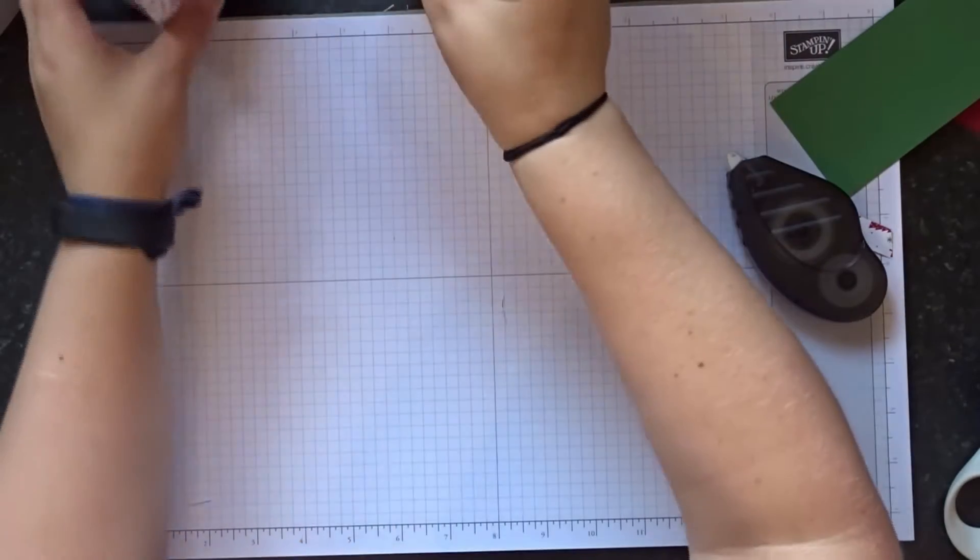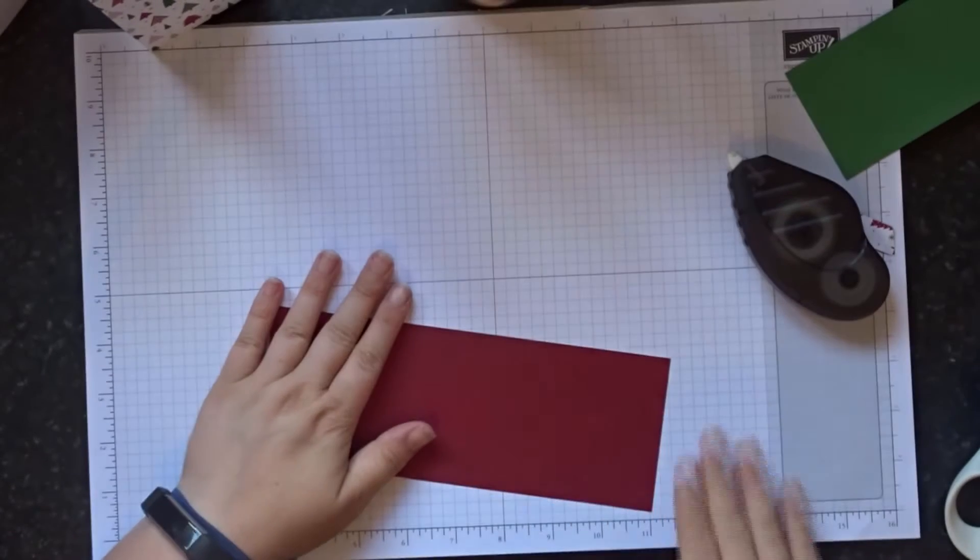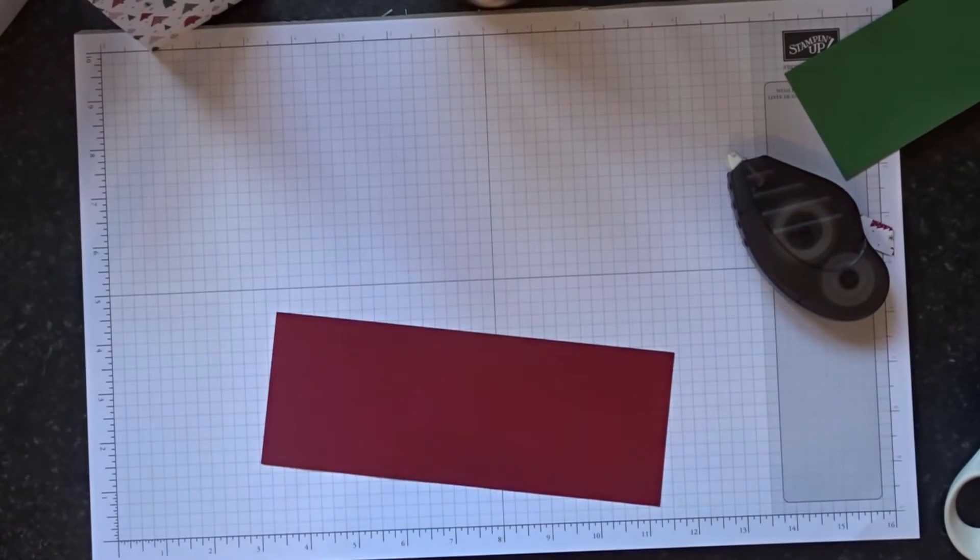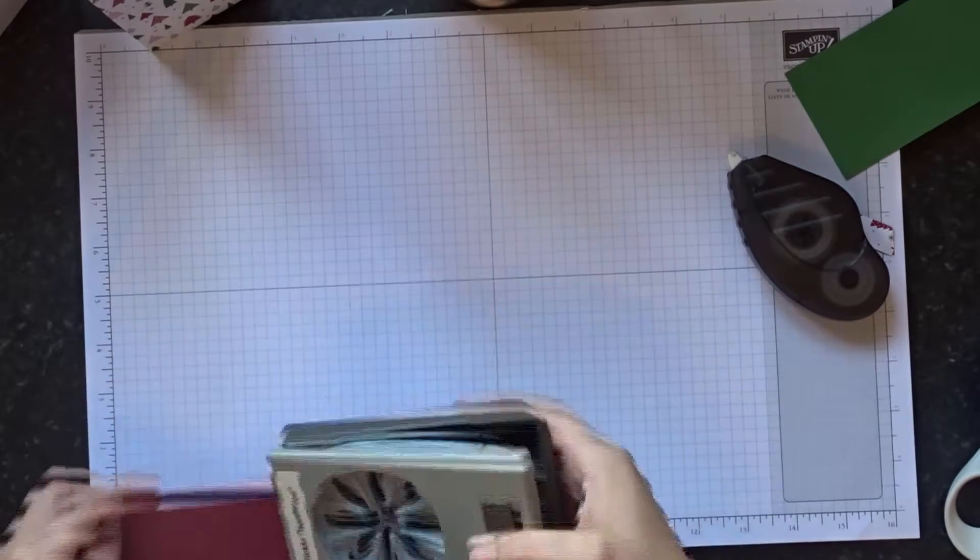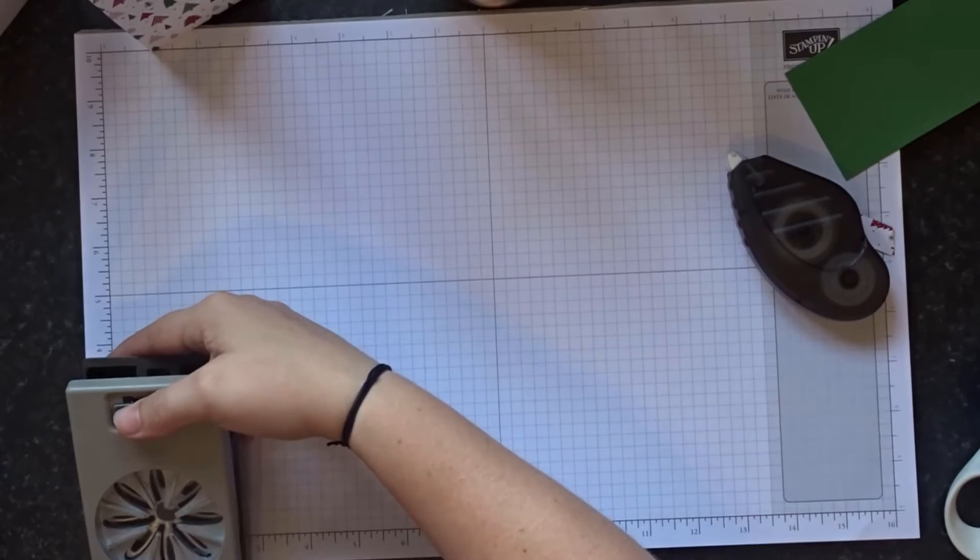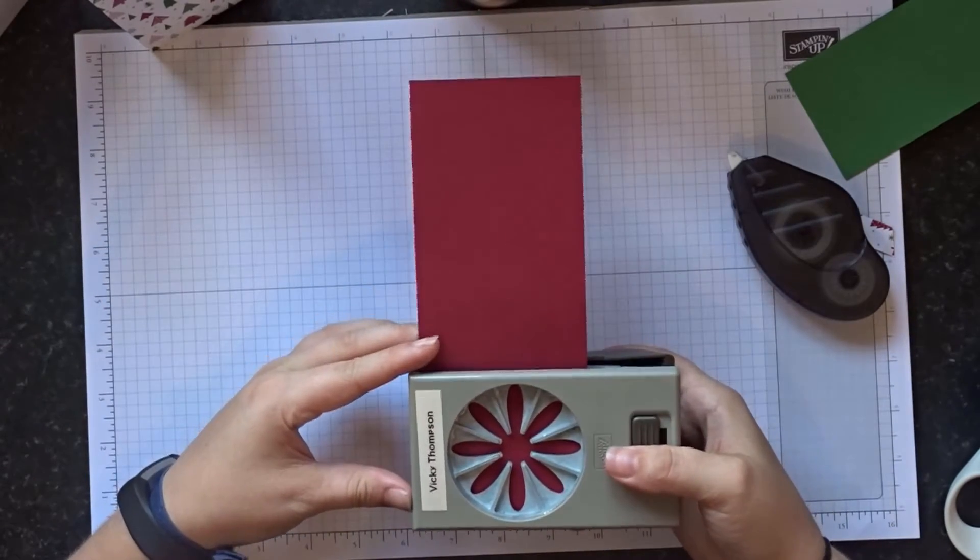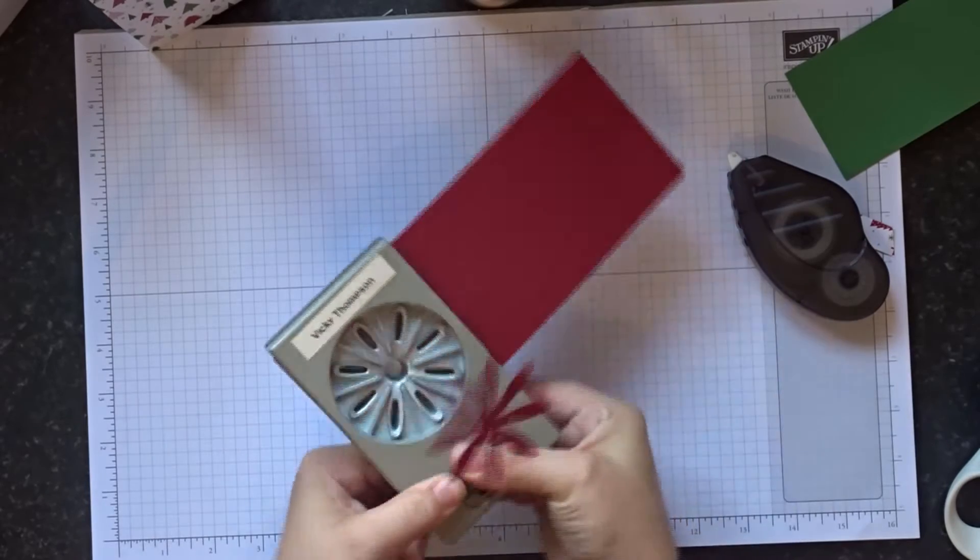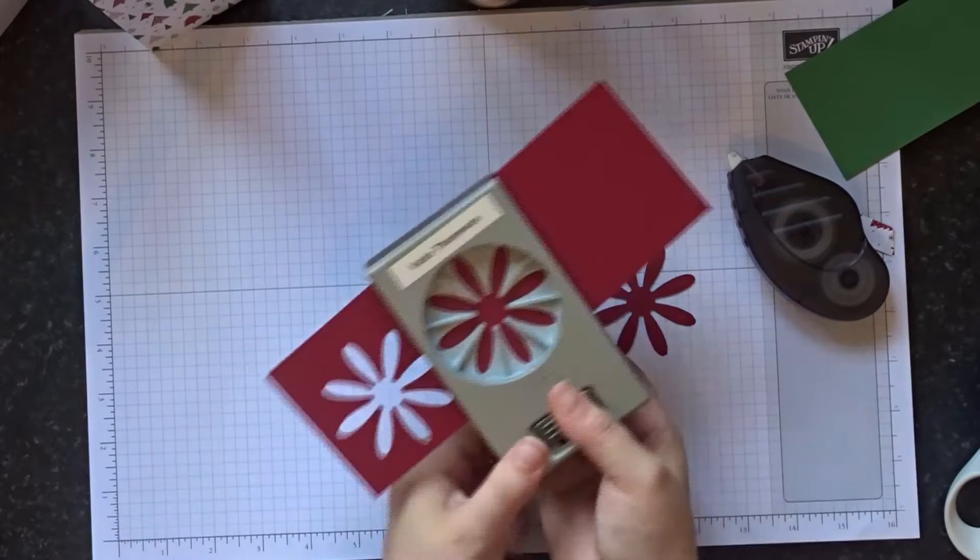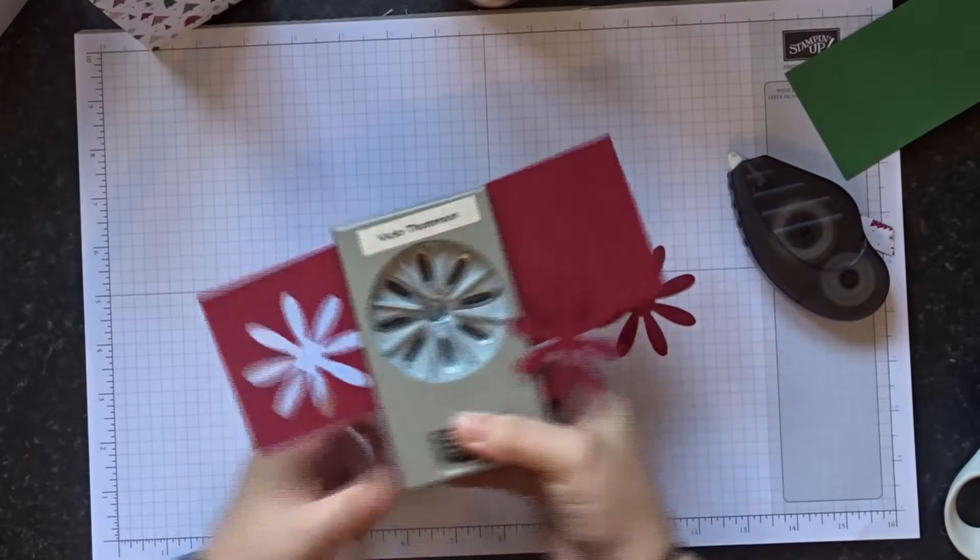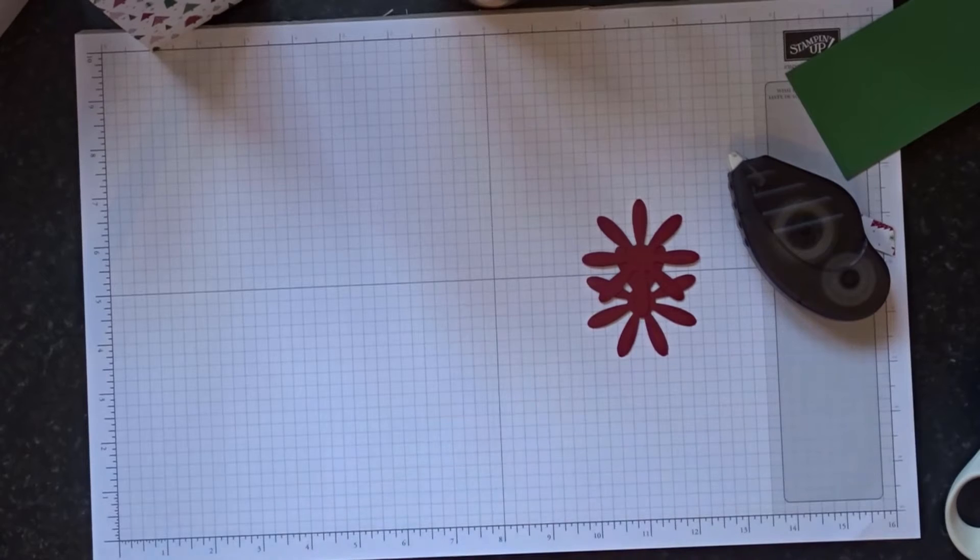So we've got a spare bit of Cherry Cobbler. How wide does this need to be? Well it needs to be able to fit the punch. So how big is that? So it needs to be probably two and three quarters. What we're going to do is punch out two of the daisy punch, using the daisy punch. I know it's Christmas I'm doing, but I think as long as you use the appropriate colour, this punch works with everything.